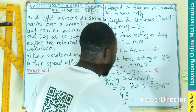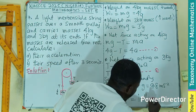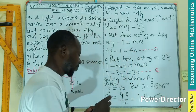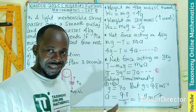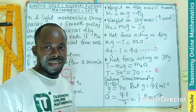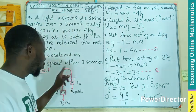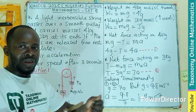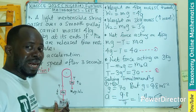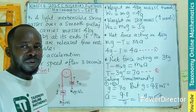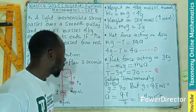Substituting g = 9.8 m/s², we get a = 9.8 ÷ 7, which equals 1.4 m/s². So we can conclude that the acceleration of the two masses is 1.4 m/s². Both masses have the same acceleration because the pulley is smooth and the string is inextensible — so there is no difference in acceleration between them.